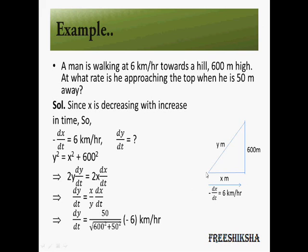Consider a man approaching a hill that is 600 meters high. As he approaches, x is decreasing. So if his speed is given as 6 kilometers per hour toward the hill, then dx/dt will be minus 6.